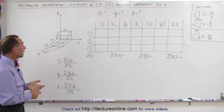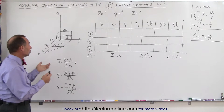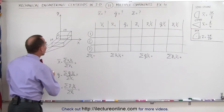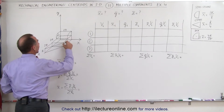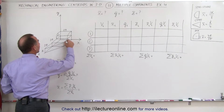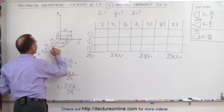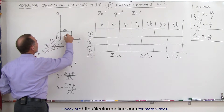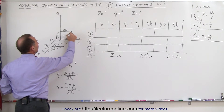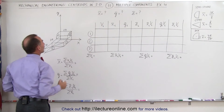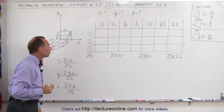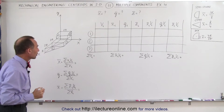Let's start out by labeling the three objects. Let's call the rectangular slab object number one, the triangular slab object number two, and the quarter cylinder object number three.